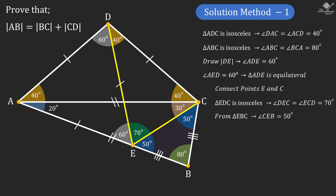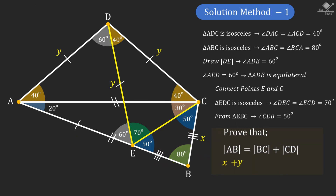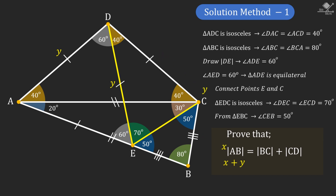Now let's name all the equal line segments as x and y. From here we can see that line segment AB is equal to x plus y units, and since line segments BC and CD are equal to x and y, that will prove AB equals BC plus CD.